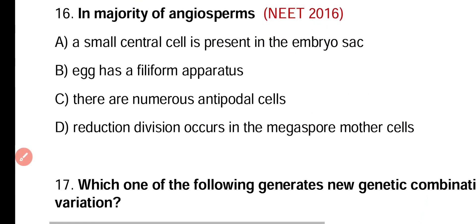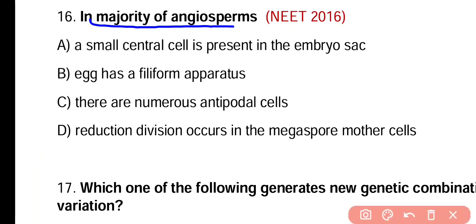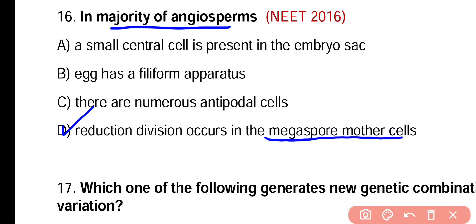Question number sixteen. In majority of angiosperms: a small central cell is present in the embryo sac; egg has filiform apparatus; there are numerous antipodal cells; or reduction division occurs in the megaspore mother cells. Correct answer is option D. In angiosperms, reduction division occurs within the megaspore mother cells and four megaspores are produced, of which only one functional megaspore develops into embryo sac.